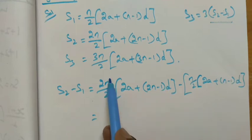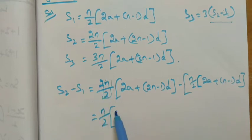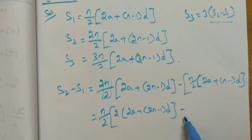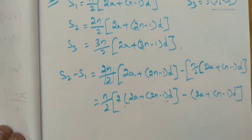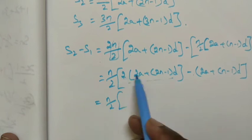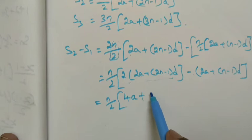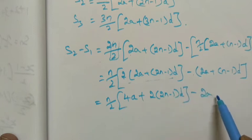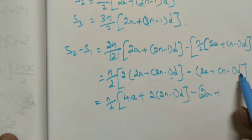n/2 multiply: 2a + (2n-1)d minus [2a + (n-1)d]. This equals n/2[2a + 2(2n-1)d - 2a minus (n-1)d].